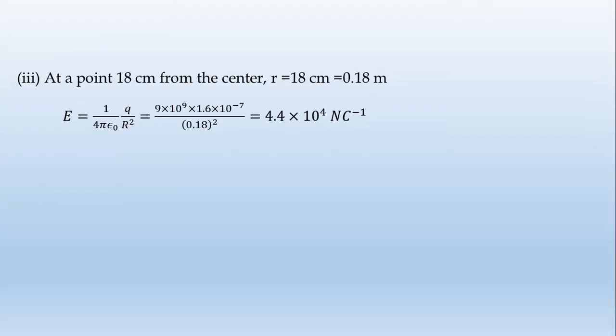Third, at the point 18 centimeter from the center of the sphere. R is equal to 18 centimeter, which is 0.18 meter. The same formula: E is equal to 1 divided by 4 pi epsilon naught times q divided by R squared.